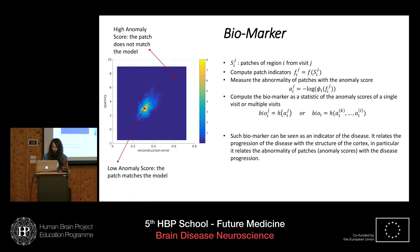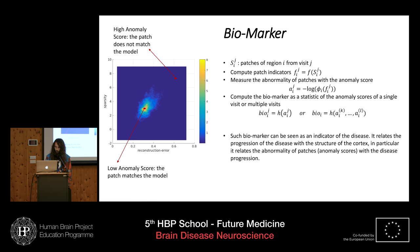Once we have the model, we can compute for each patch in the following visits an anomaly score, which is a scalar value that quantifies how much the patch deviates from the learned model. Finally, we can compute the biomarker from a specific set of anomaly scores — for example, from a specific visit using the median — or we can compute it from multiple visits using a statistical test, using the p-value resulting from the test as the biomarker.